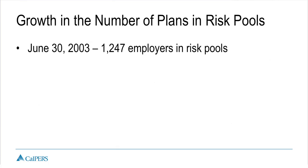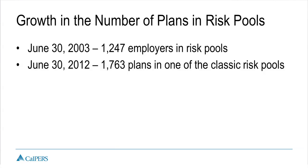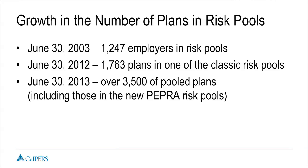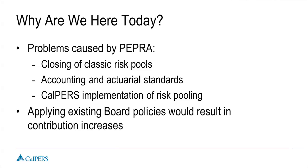Since the beginning of pooling, the number of plans has grown dramatically — starting with over 1,200 plans. From 2003 to 2012 alone, we saw an increase of over 500 plans, from brand-new agencies joining CalPERS, second tiers, and mergers. Most recently, a large number of second tiers were created due to the economic downturn and the enactment of PEPRA. After PEPRA came into place, the number of pool plans virtually doubled — we are now up to over 3,500 pool plans.